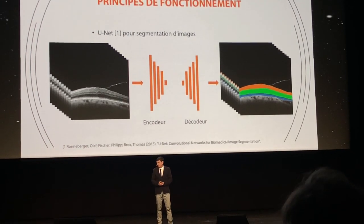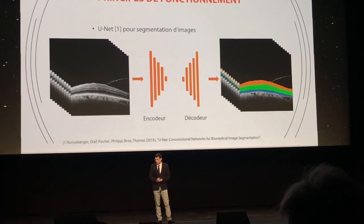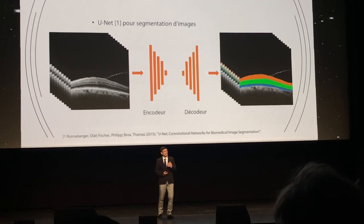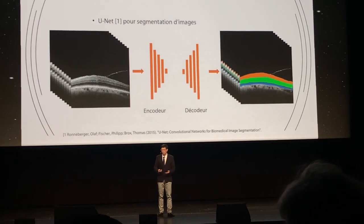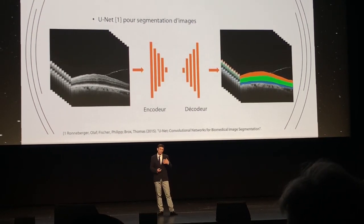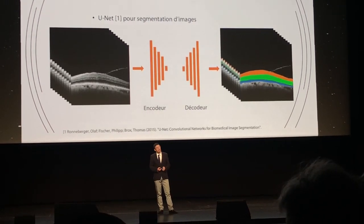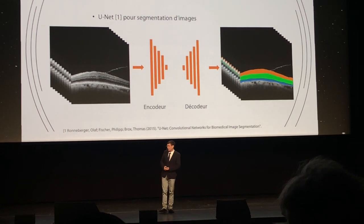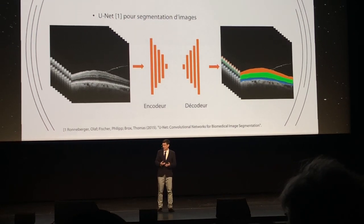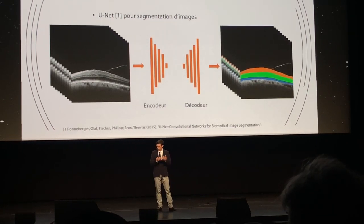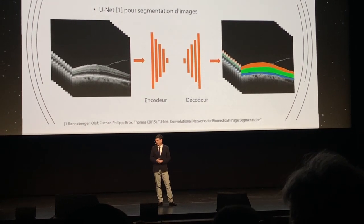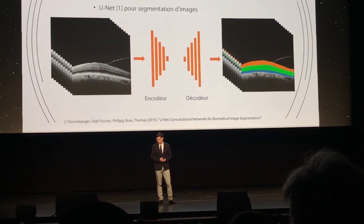There are also other types of artificial intelligence, such as those that enable segmentation — that is, delimiting zones on our images. As before, we feed in an image or a volume of images and run it through an encoder, but also a decoder, and we obtain the result you can see on the right.